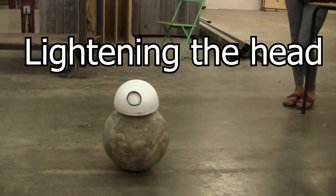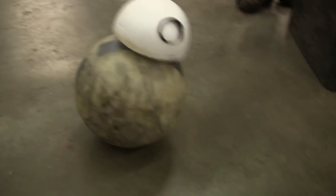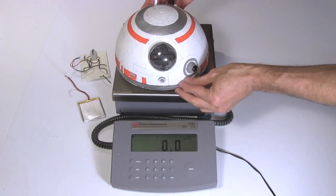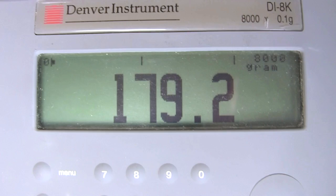Next came making the head lighter. The best I've gotten BB-8 to work was with the deodorant ball casters in the head and with no heavy lipo battery in the head. So no LED lights. That weighed in at 179 grams with the battery stuff removed.